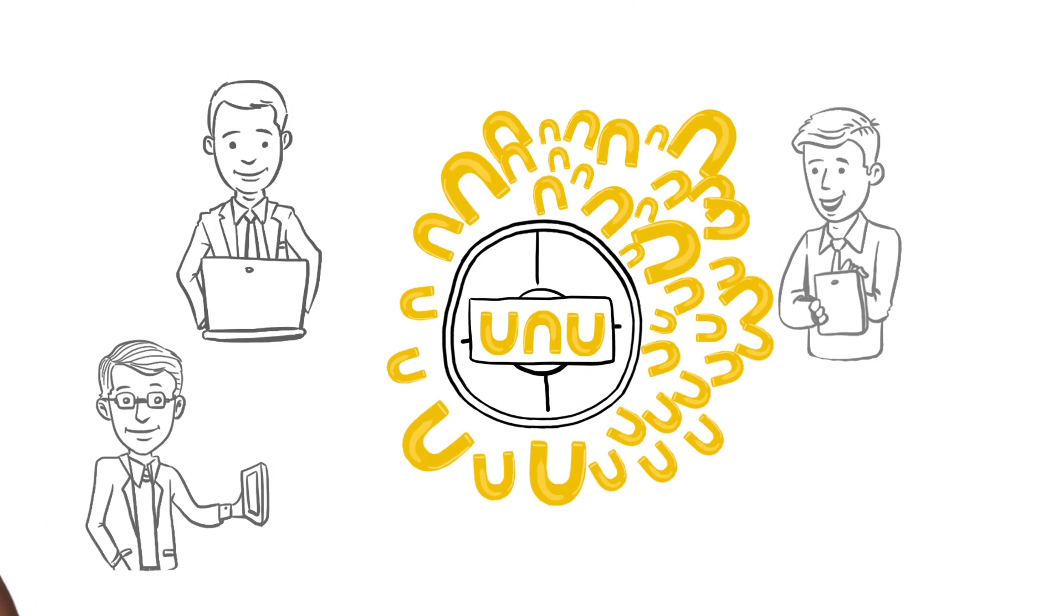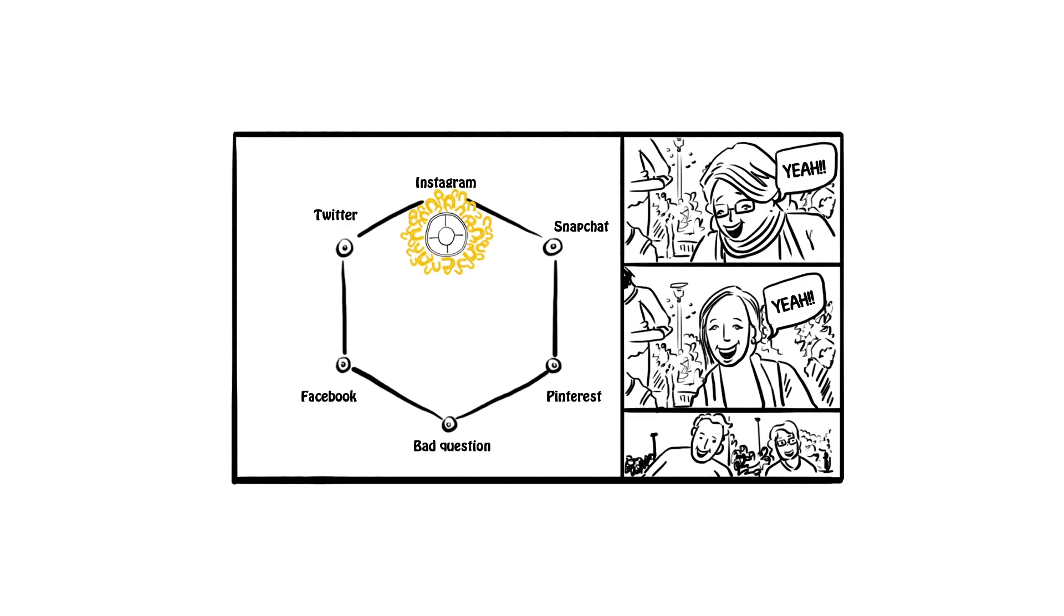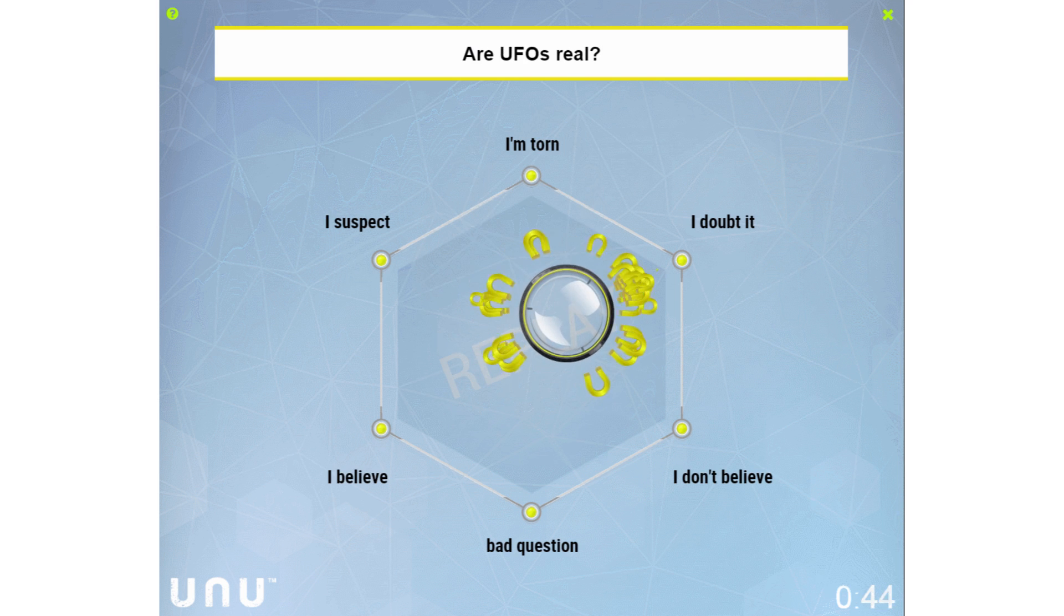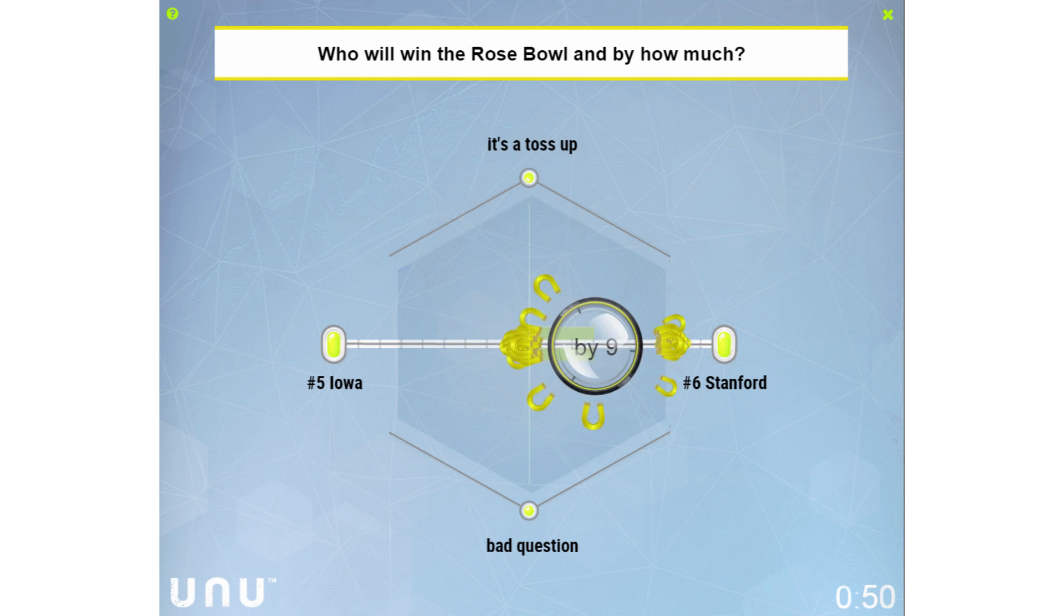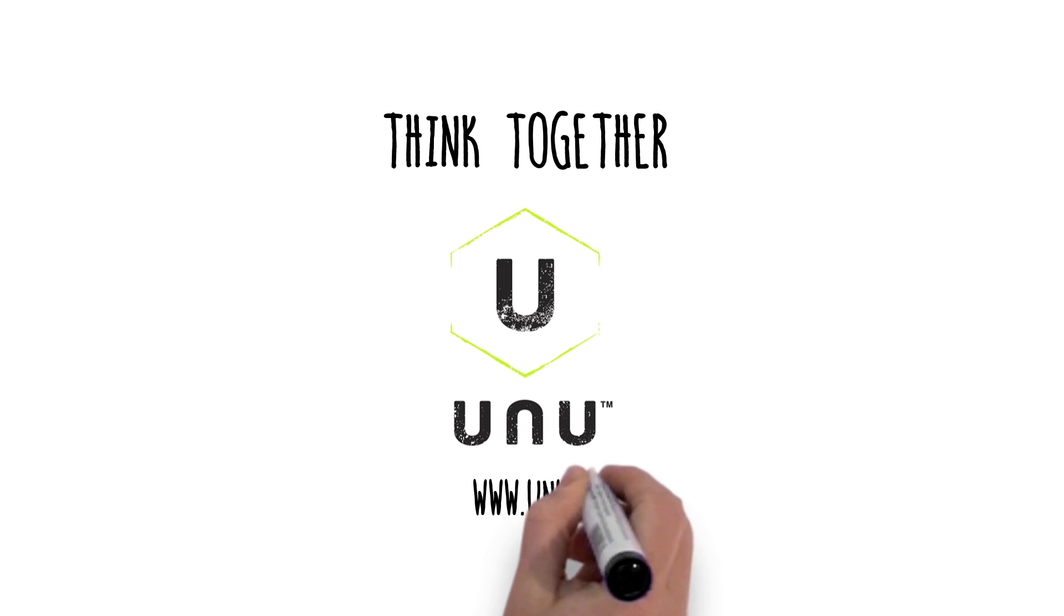We call each swarm an UNU. Combining their wisdom and intuition into an UNU swarm, social groups can be smarter together, more insightful, more creative, and best of all, more fun. Think together at www.unu.ai.